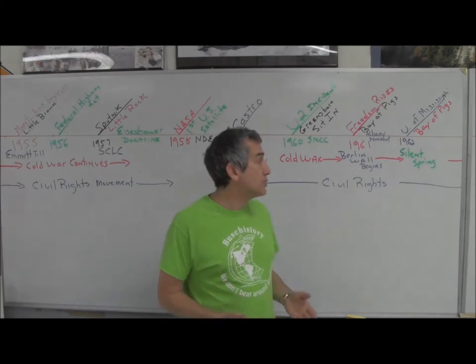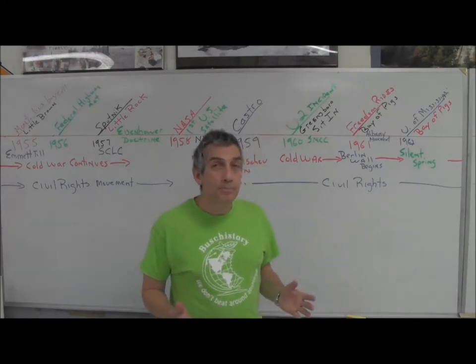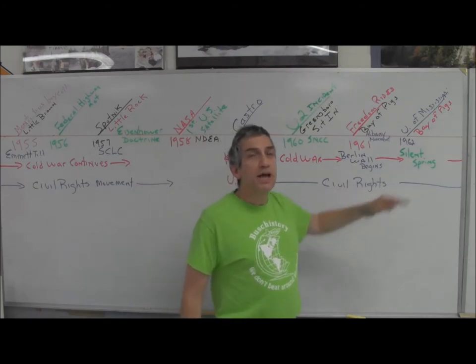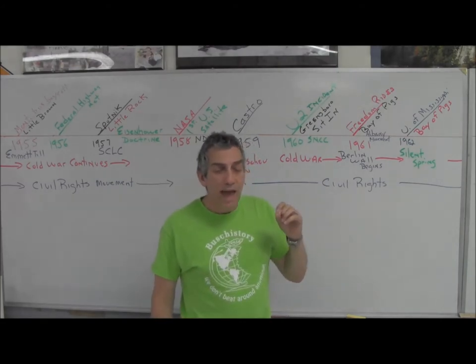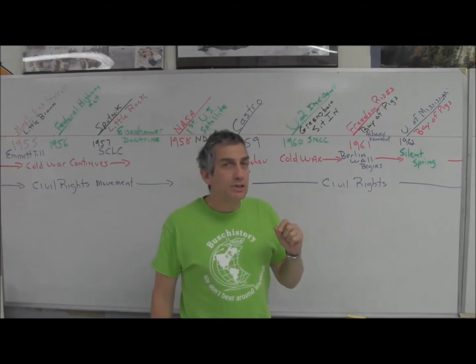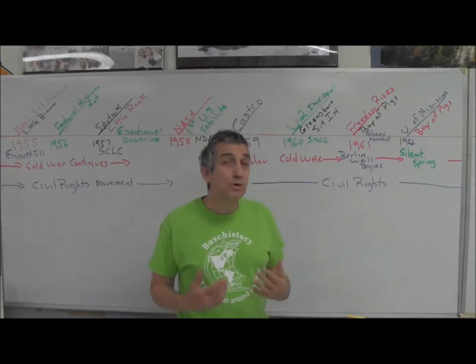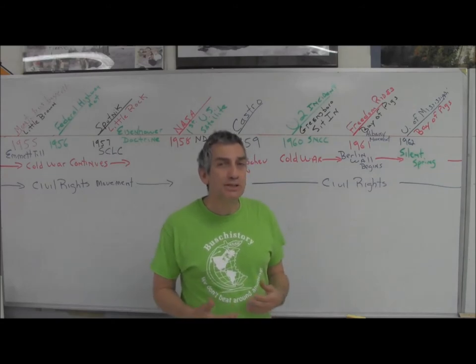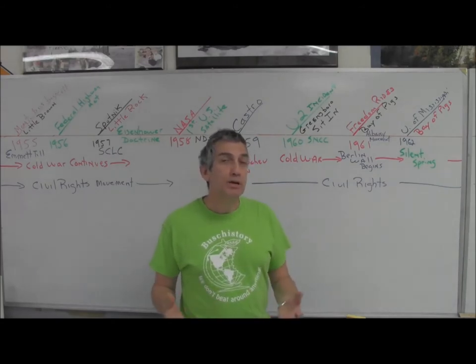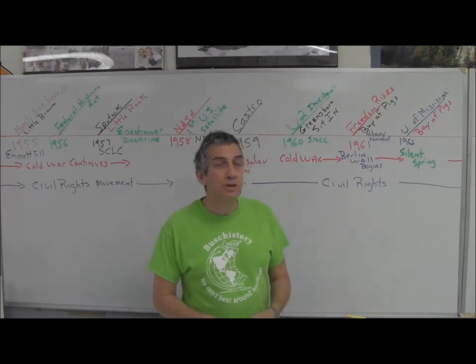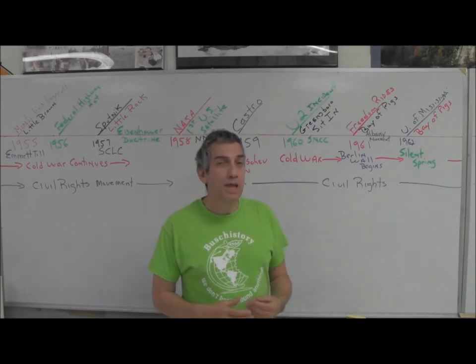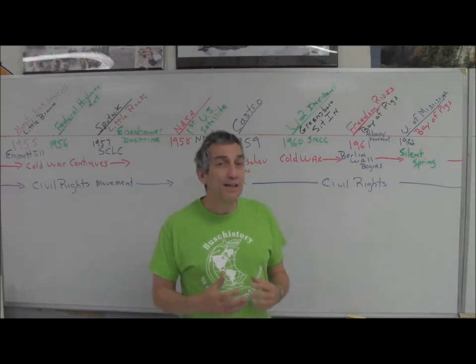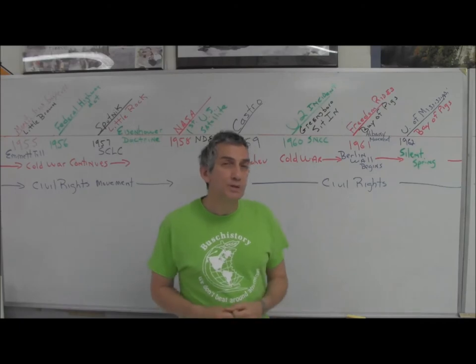In 1962, we're going to get Rachel Carson writing her book The Silent Spring. Silent Spring talks about springtime without bees, animals, and birds, attributed to environmental pollution like DDT and pollution that gets into the water cycle. That's going to essentially be the beginning of the environmental movement in the United States.